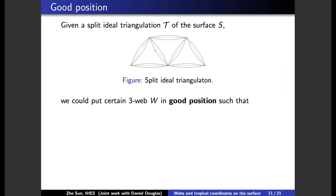And then we put the webs on this surface. And we can actually put it in good position with respect to this ideal triangulation. So how we do that? So when we have this blue line representing a web, when we have this kind of picture, because the intersection number of this blue line with this bigon is four,